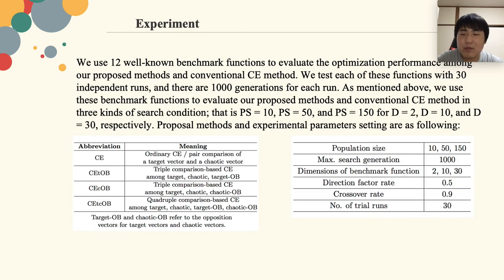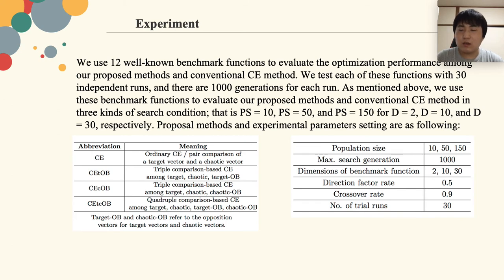For the experiment part, we used 12 well-known benchmark functions to evaluate the optimization performance among our proposed methods and the conventional chaotic evolution method. We tested each of these functions with 30 independent runs, and there are 1000 generations for each run. We used these benchmark functions to evaluate our proposed methods and the conventional chaotic evolution method in three kinds of search conditions.